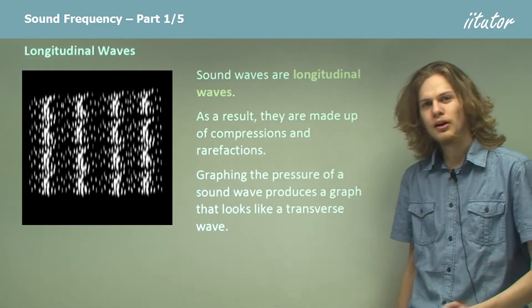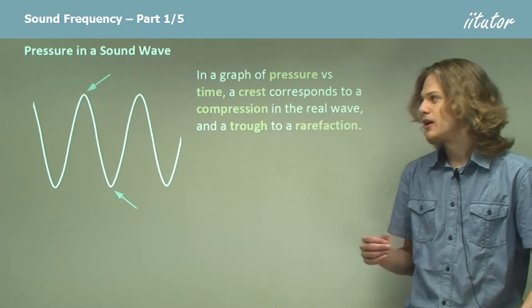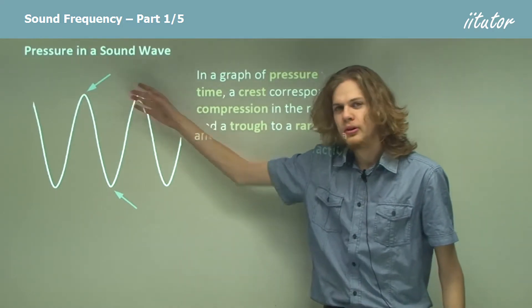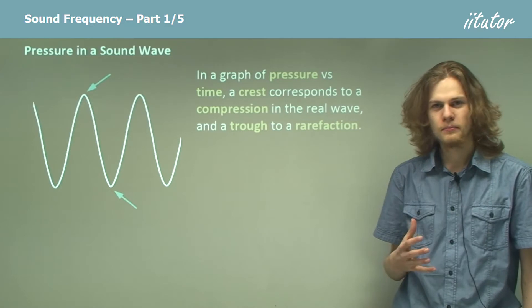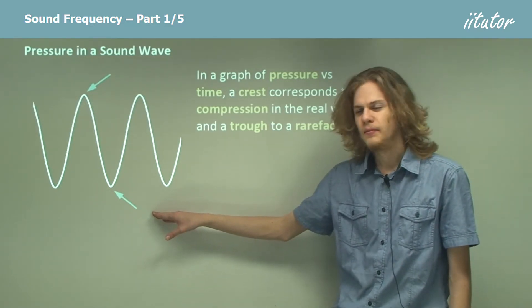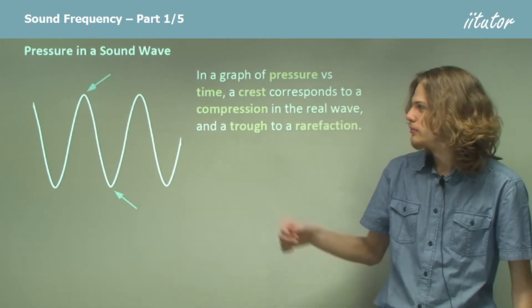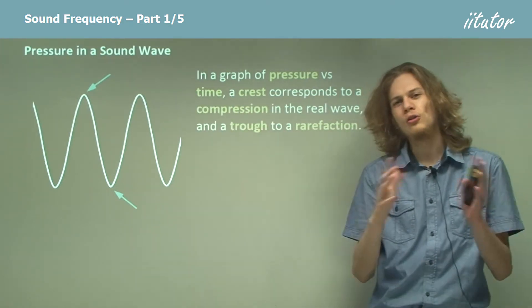So if we were to graph it, it might look something like this. And so in this case a crest at the top will relate to a compression and a trough at the bottom will relate to a rarefaction. So here the particles are very far apart and up here the particles are very close together.